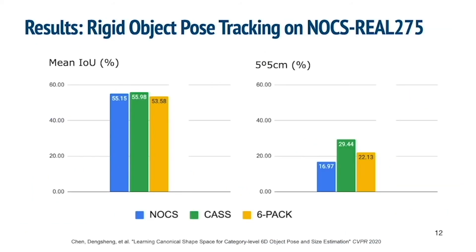Here we show quantitative results. On NOCS rigid object dataset, compared to single-frame state-of-the-art methods NOCS and CAS, and tracking state-of-the-art method 6-pack, we have a higher mean IOU and a much higher 5-degree 5-centimeter percentage.